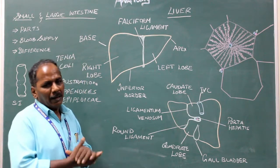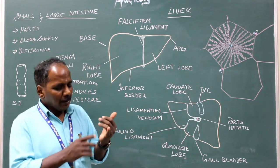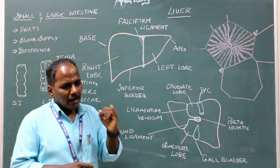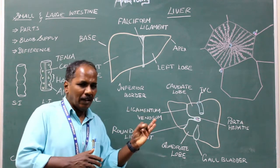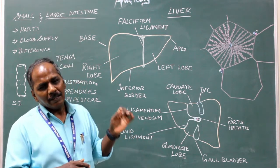Blood supply: It is the only organ getting both oxygenated and deoxygenated blood. So blood supply by hepatic artery and portal vein. Venous drainage: hepatic vein.